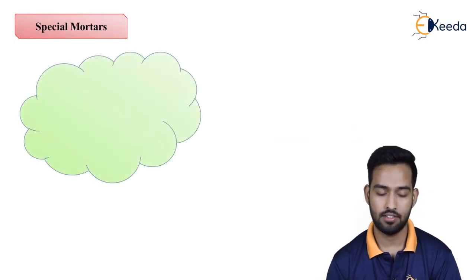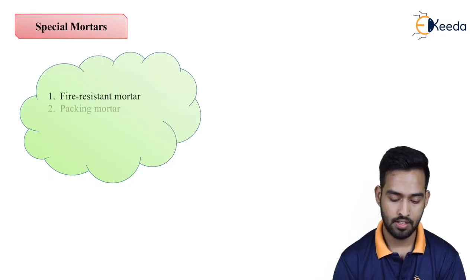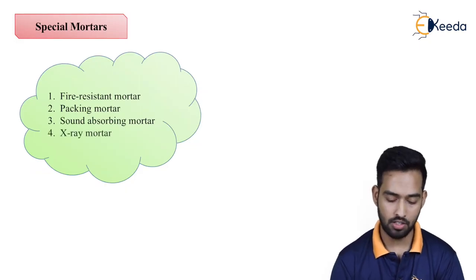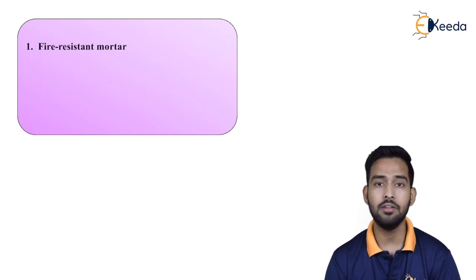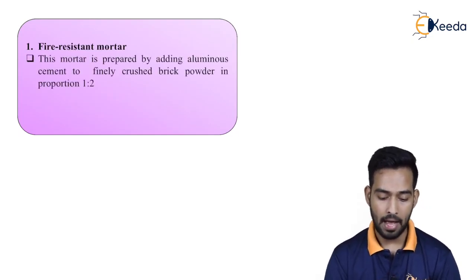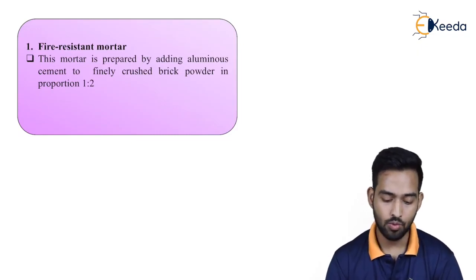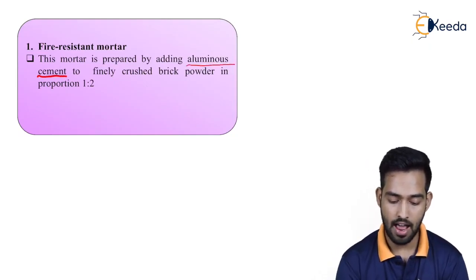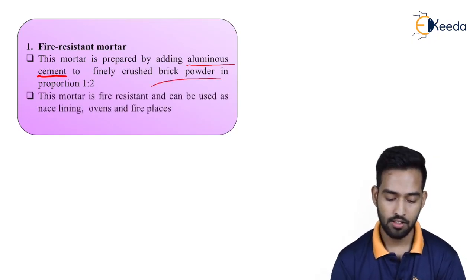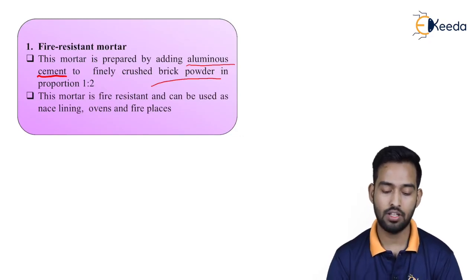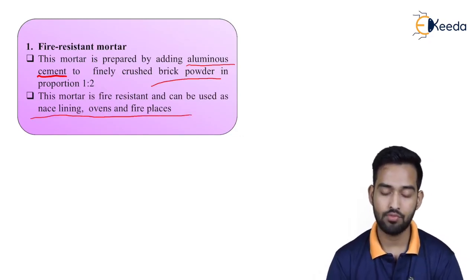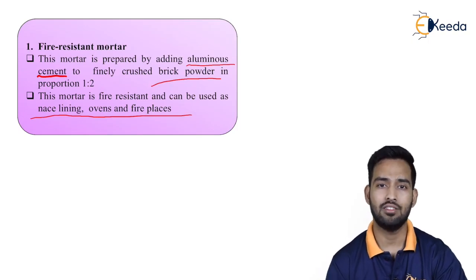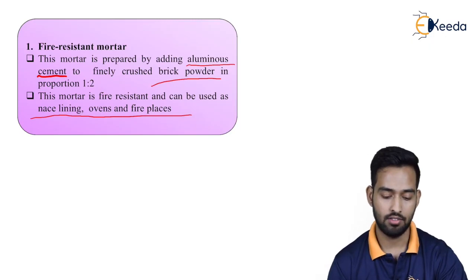Then come some special mortars: fire resistant mortar, packing mortar, sound absorbing mortar, and x-ray mortar. Fire resisting mortar is prepared by adding alumina cement to finely crushed brick powder in the proportion of 1:2. This mortar is fire resistant and can be used as kiln lining, ovens, and fireplaces — wherever burning or fire is involved in industries.